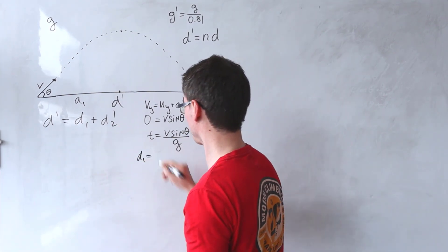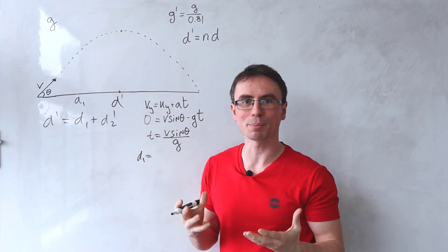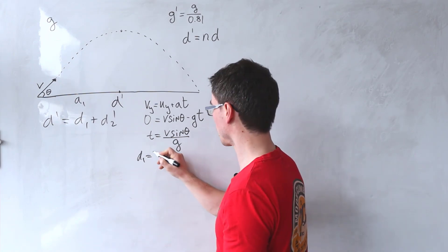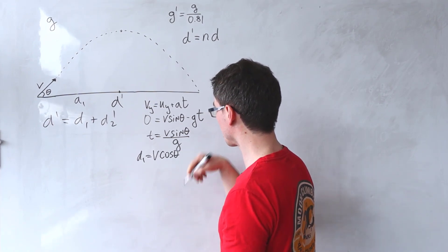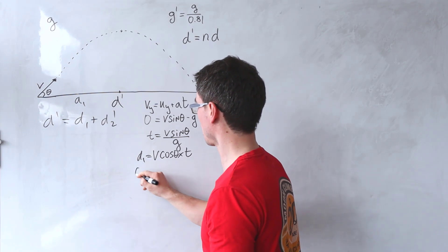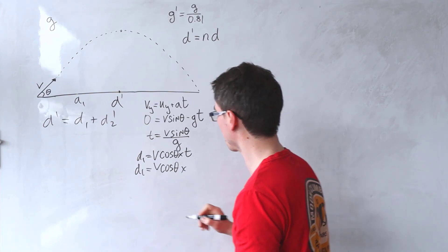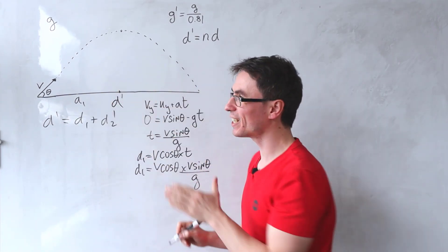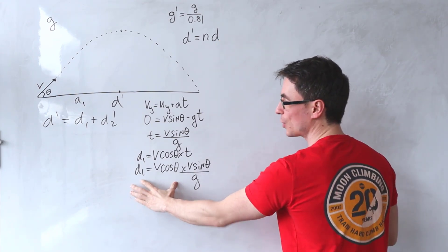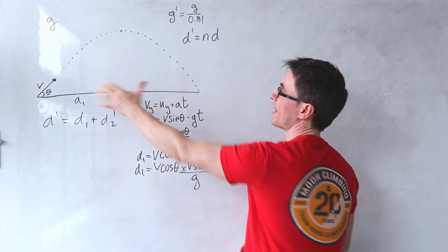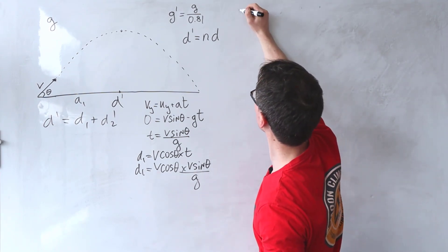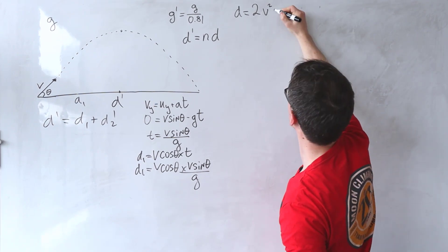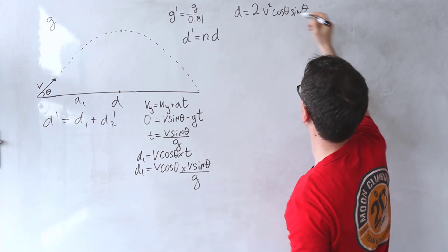d1 is the horizontal range. In projectile motion, horizontal speed is constant, so d1 equals the velocity in the x direction, which is v cos theta, multiplied by the time v sine theta over g. So d1 = v cos theta times v sine theta over g. By symmetry, the full original range d would be twice this: d = 2v² cos theta sine theta divided by g.